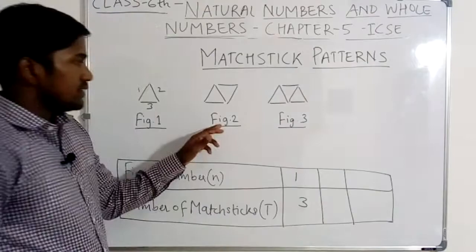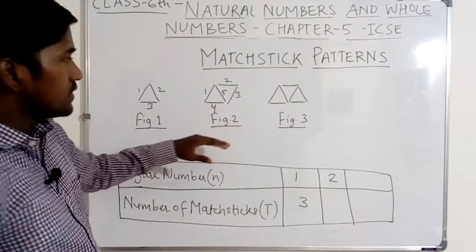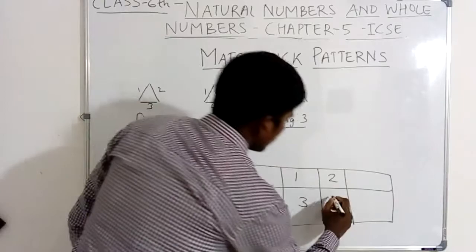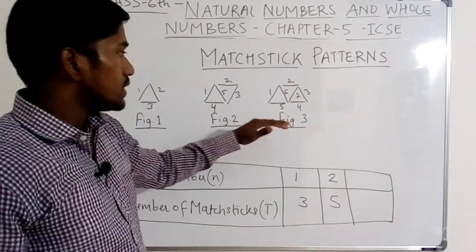In figure number two, how many mastic are used? One, two, three, four, five. Five numbers of mastic are used in figure number two, which has two triangles. In figure number three, how many mastic are used? One, two, three, four, five, six, seven. Seven numbers of mastic are used in figure number three.